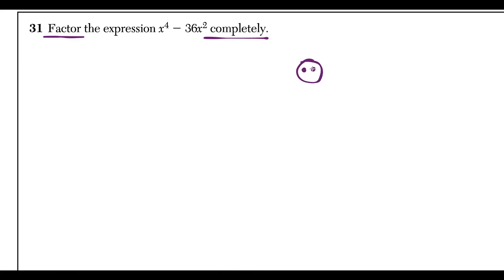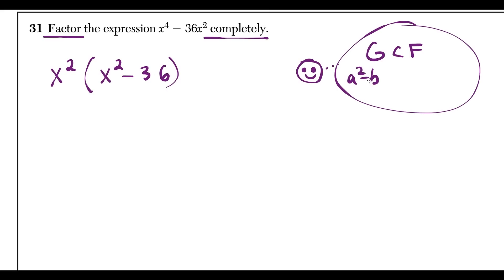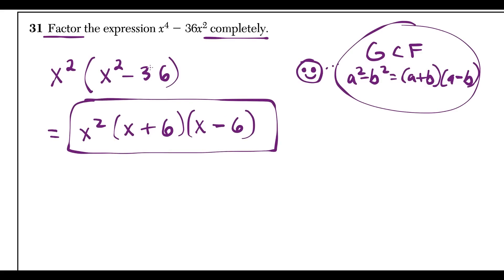Question 31: factor the expression completely, meaning keep factoring until you can't anymore. The greatest common factor is x², giving x²(x² − 36). Now x² − 36 is a difference of two squares, factoring as (x + 6)(x − 6). The final answer is x²(x + 6)(x − 6). Knowing that 36 is a perfect square — 6 times 6 — allows you to factor quickly.